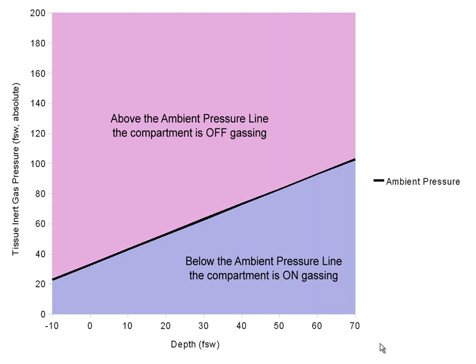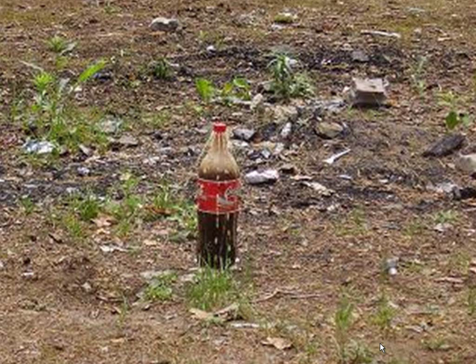If we are above the ambient pressure line, we're off-gassing. If we were at altitude, for example, we'll off-gas. If the ambient pressure is greater than the pressure of the tissues in our body, we will on-gas. One of the goals of decompression is to not off-gas explosively. What we're trying to do is turn the nitrogen or helium in your blood from a dissolved state to a gaseous state in a controlled way.